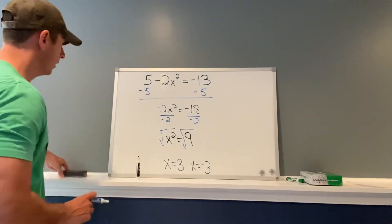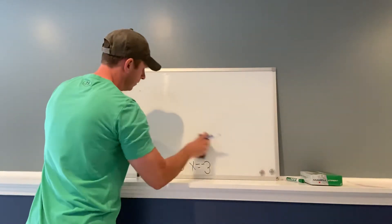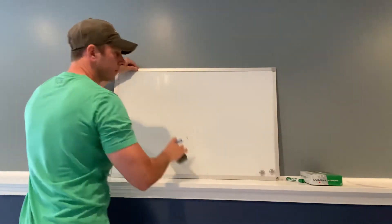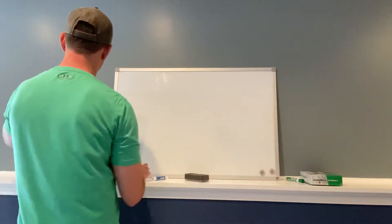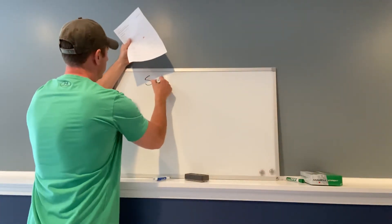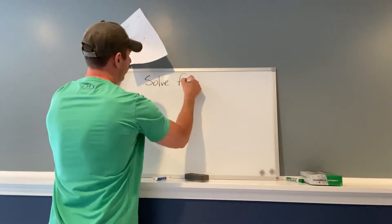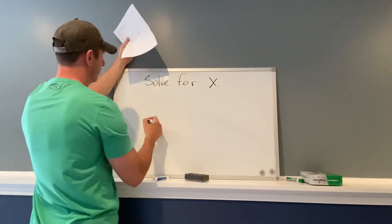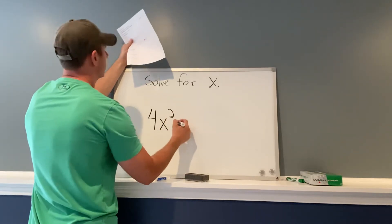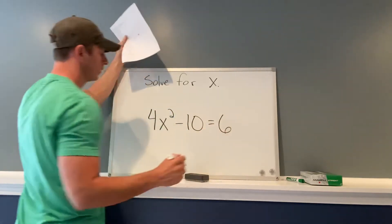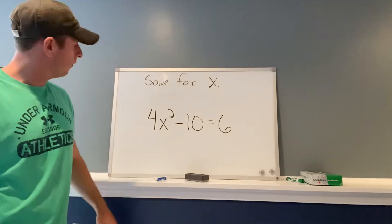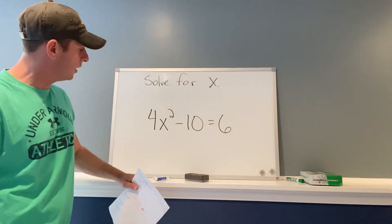All right. Here's the example that I need you guys to do for your assignment. Solve 4x² - 10 = 6.